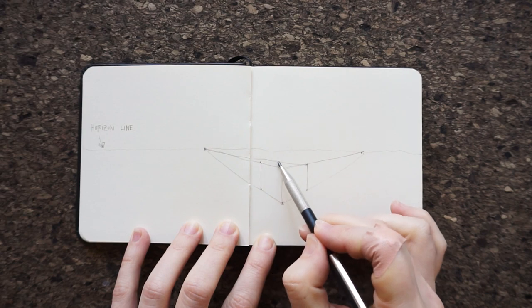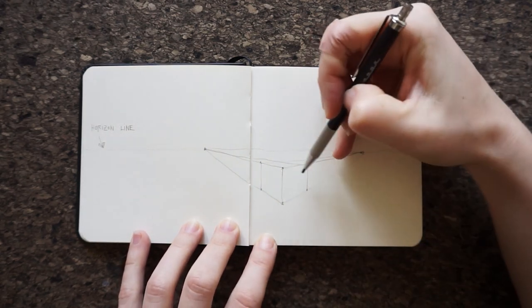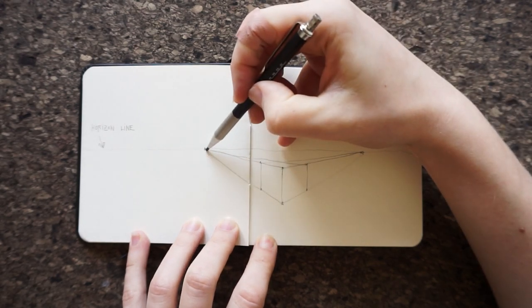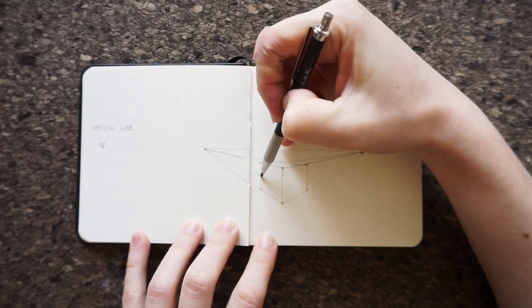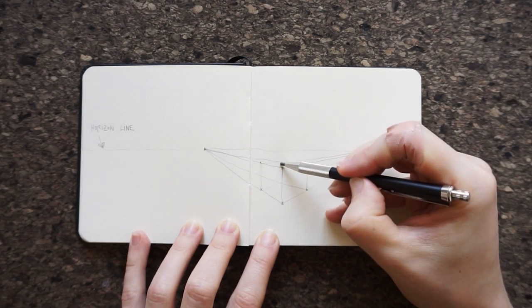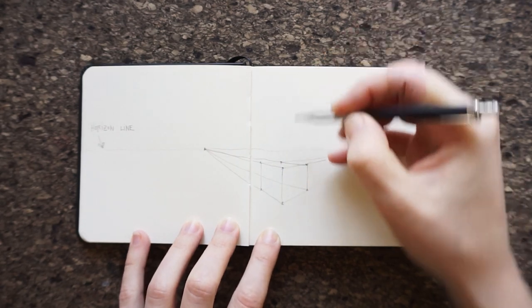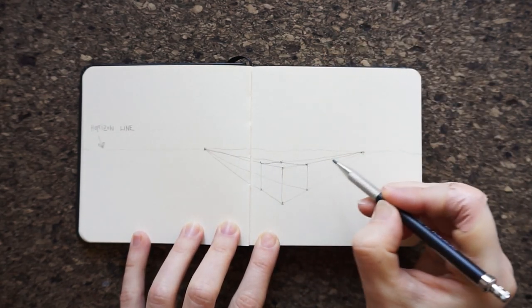Now connect the endpoints of the vertical line and the vanishing points with construction lines. Where the construction lines intersect is the fourth edge of the cube that's facing away from us. It's starting to look like a cube, right? You can retrace the cube with thicker lines to make it stand out more.